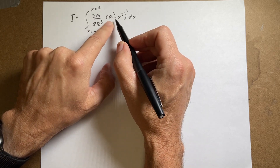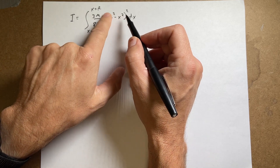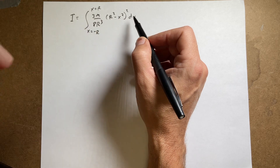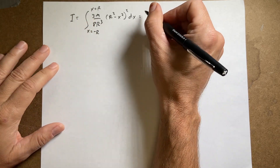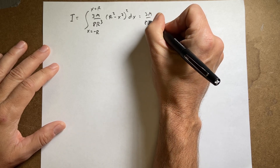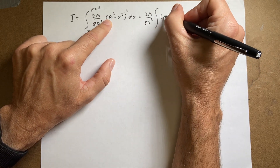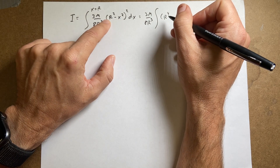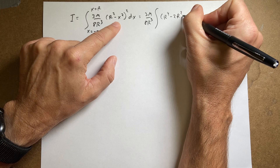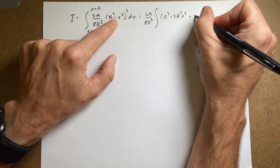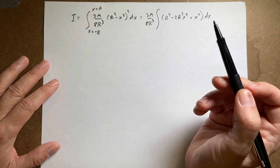Rather than a u-substitution — since I don't have a du available — I'll just expand (r² − x²)². Multiplying it out: r² times r² is r⁴, then minus x² times r² and r² times minus x² gives minus 2r²x², and then plus x⁴. So the integrand becomes r⁴ − 2r²x² + x⁴, which is a polynomial I can integrate term by term.